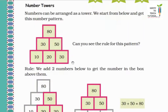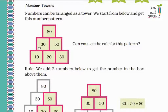Now let's see number towers. Numbers can be arranged as a tower; we start from below and get this number pattern. The rule is: we add the two numbers below to get the number in the box above them. For example, 10 plus 20 equals 30. Same way, 20 plus 30 equals 50. When you add those two numbers, you write the answer in the box above them. Then 30 plus 50 equals 80.